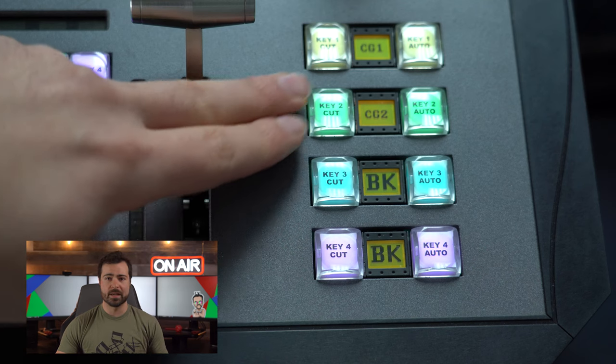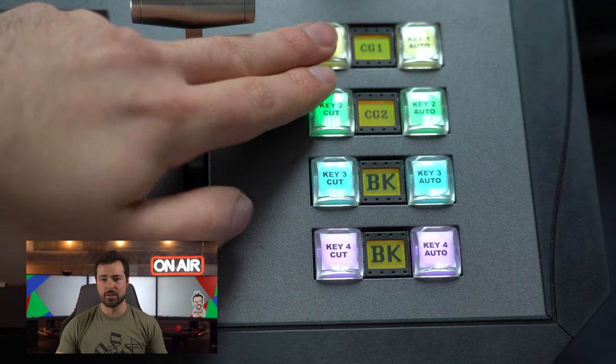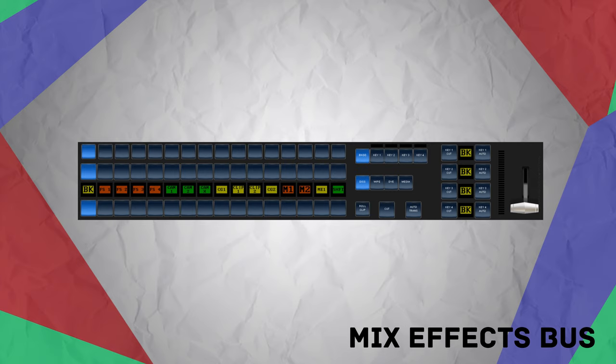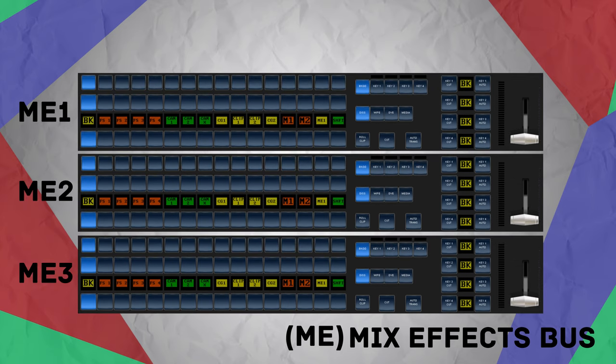Most switchers these days have multiple keyers, which allow for multiple superimpositions to make for a more complex final composite. Keyers can have either a fixed or adjustable priority, referring to what level in the layered video stack they occupy relative to the others. For example, if keyer 2 has a higher priority than keyer 1, the video source in keyer 2 would be layered over top of keyer 1, and all keyers have a higher priority than the background bus. When you put all these concepts together, you get what's called a single mix effects bus — or ME — on the switcher. A switcher can scale up by adding multiple MEs, and their composited outputs can even be re-entered onto other MEs to create multi-layered effects.